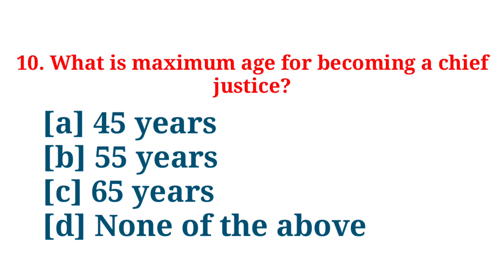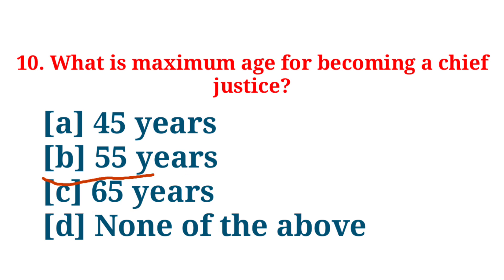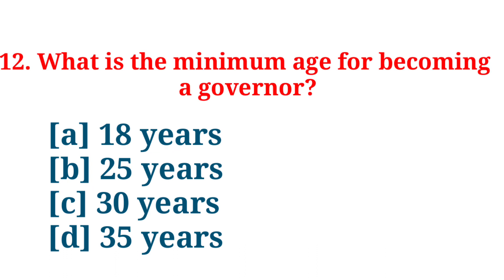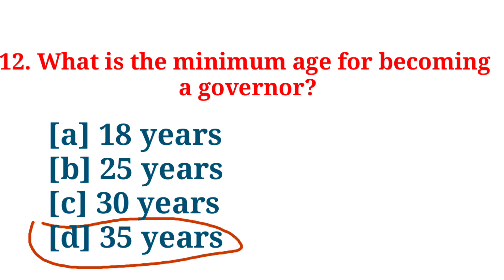What is the maximum age for becoming a Chief Justice? Answer: 65 years. What is the minimum age for becoming a Chief Minister? Answer: 25 years. What is the minimum age for becoming a Governor? Answer: 35 years.